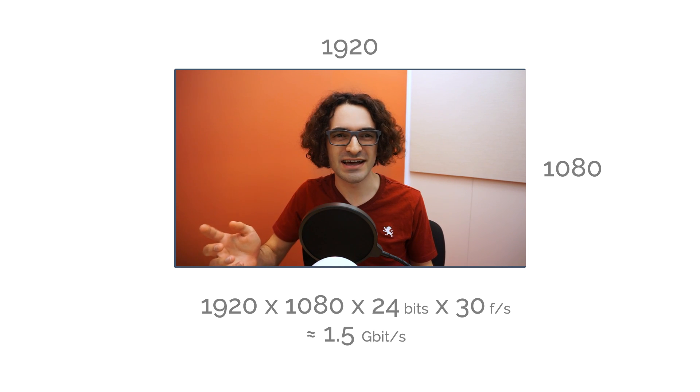Have you ever thought about how video streaming is possible? Let's think about how big a typical 1080p video is. 1920 to 1080 pixels, 24 bits each, 30 frames per second - that's almost 1.5 gigabits per second. How can you transmit that much data over the air in real time? The answer is video compression.